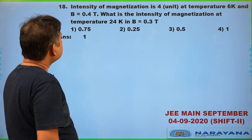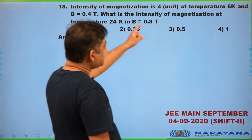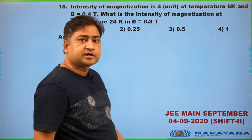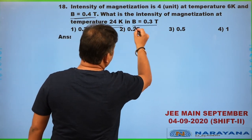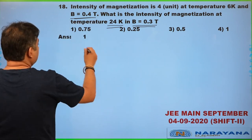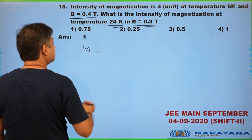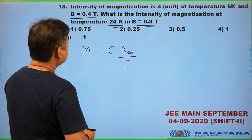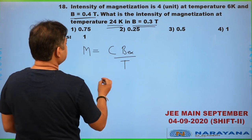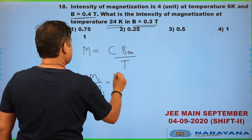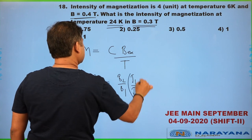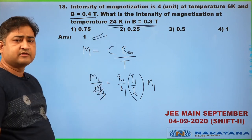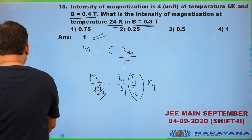Question 18: intensity of magnetization M₁ = 4 SI units at temperature T₁ = 6 K and external magnetic field B₁ = 0.4 T. Find M₂ at T₂ = 24 K and B₂ = 0.3 T. Using Curie's law: M ∝ B/T, so M₂/M₁ = (B₂/B₁)(T₁/T₂) = (0.3/0.4)(6/24) = 0.75 × 0.25 = 0.75. The answer is 0.75.